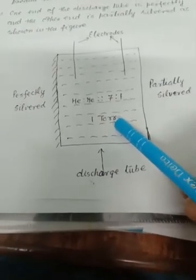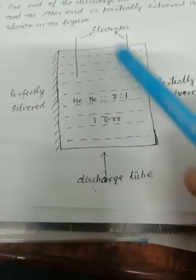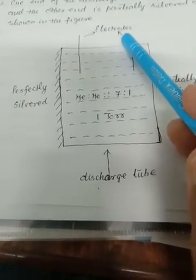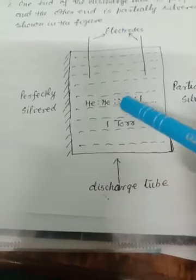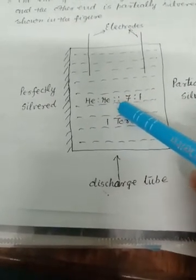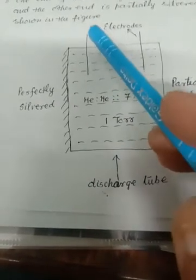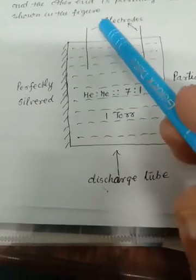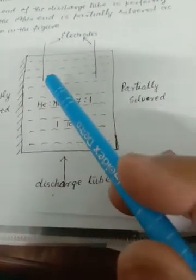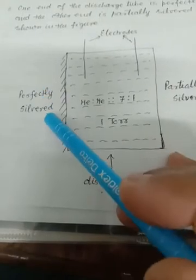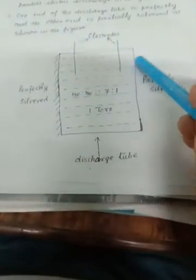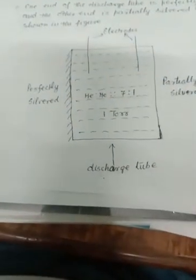1 torr pressure means 1 mm of mercury. On the electrodes, a high-frequency AC signal is applied for electrical discharge. So the active material is helium-neon in the ratio of 7:1 at a pressure of 1 torr. For pumping, the source is the electrical discharge via a high-frequency AC signal. The third requirement is the optical resonator — one end is perfectly silvered and the other end is partially silvered as per requirement.